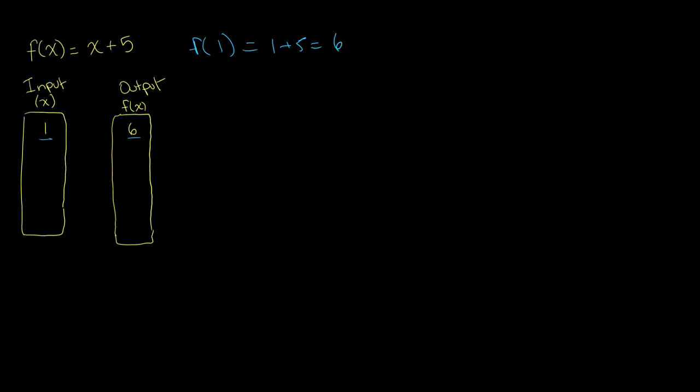Similarly, if you take an input of -1, we would get f(-1) = -1 + 5, giving us an output of 4. So the input of -1 corresponds to the output of 4.